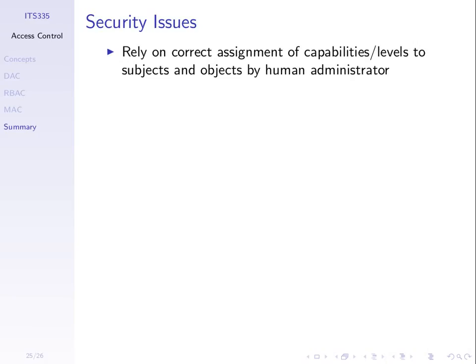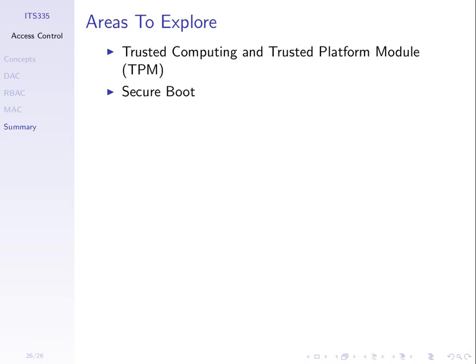The security of the system depends upon the original assignment — if the administrator does it wrong, users may be able to do things they shouldn't. This requires human intervention and is a challenging task with thousands of users and objects. In your next homework, you'll be asked to assign permissions to files given a general description, interpreting the policy and implementing it. There are also other interesting issues around trusted computing — ensuring that from boot to application load, the computer is trusted using technologies like secure boot.